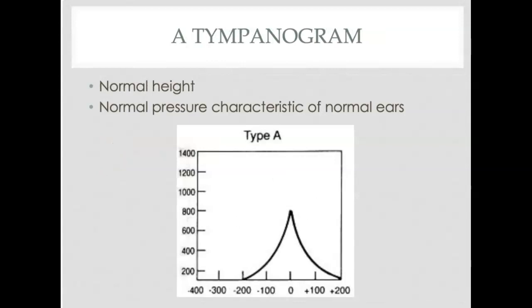Let's look at this graph. On the x-axis you have pressure in decapascals. Zero decapascals means zero pressure, plus 100, plus 200, minus 200, minus 300, minus 400. For adults and kids, you want that pressure peak to be somewhere between plus 100 and minus 150. This peak is essentially the maximum movement of the tympanic membrane. We call that compliance or admittance or just tympanic membrane movement.